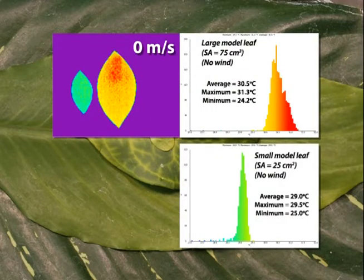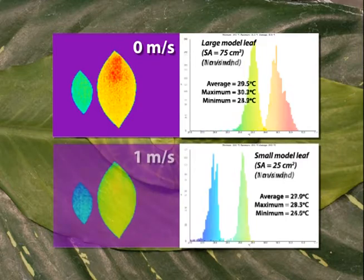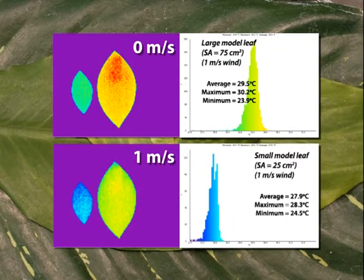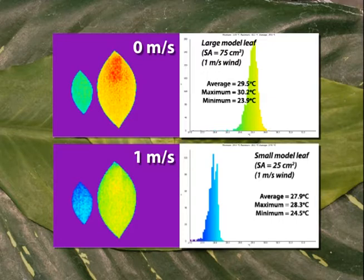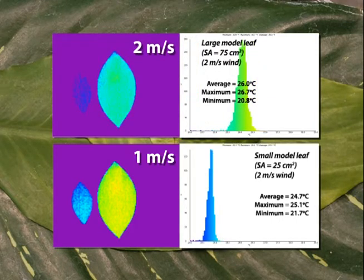Let's see now what happens when we blow air over them. The wind comes from the top of the picture. They cool down clearly, but the temperature difference remains. This is with a wind speed of about one meter per second. Now let's boost the wind speed to two meters per second. Both leaves cool down still more, but the larger leaf is still the hotter one.